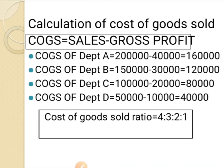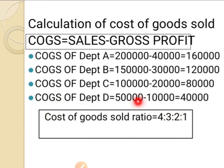Cancelling four common zeros, we get 16 : 12 : 8 : 4, which simplifies to 4 : 3 : 2 : 1. So the cost of goods sold ratio has been calculated. This ratio is used because the expenses are to be apportioned in the cost of goods sold ratio.